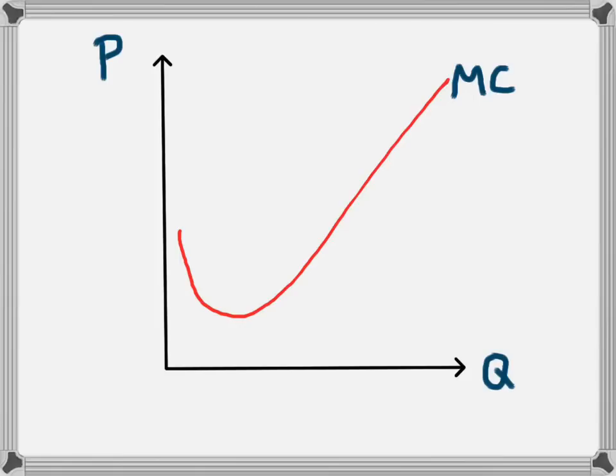The marginal revenue curve shows the extra revenue that a business will receive from increasing its output. I'm going to use an example from a perfect competition market.